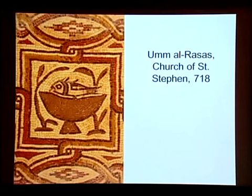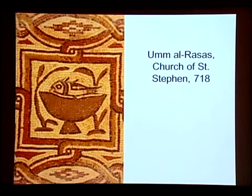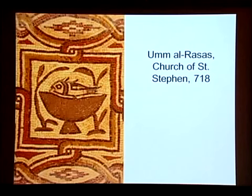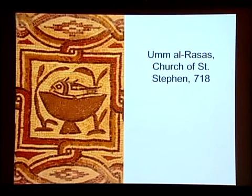So every other single image in this mosaic floor of more than 100 of them are damaged except this one. Now, what's special about this fish? It's not any special location within the mosaic floor, but they deliberately choose to leave this one undisturbed. The thought occurs to me that this is a dead fish — it's in a bowl — whereas all the other images are alive, depicting animals that are alive. But this one is dead. Is that the reason? Maybe, maybe not. I can't think of any better reason why they would leave this one image undamaged in the floor.